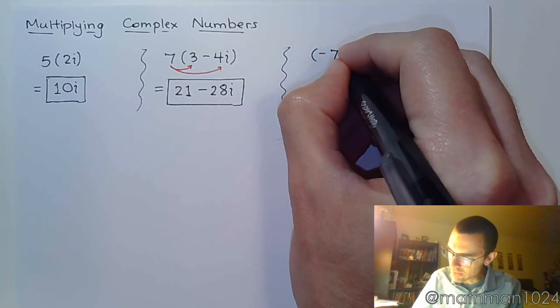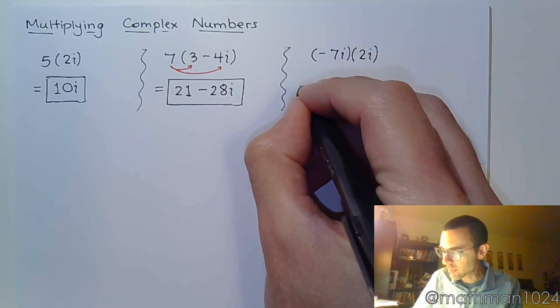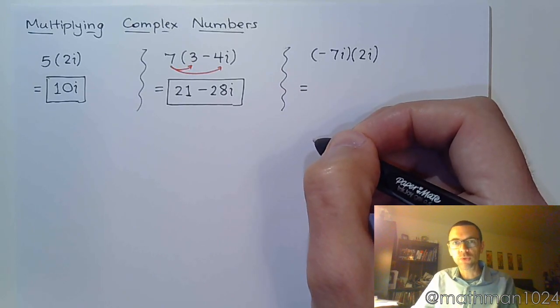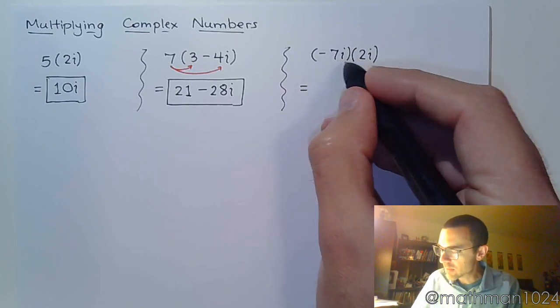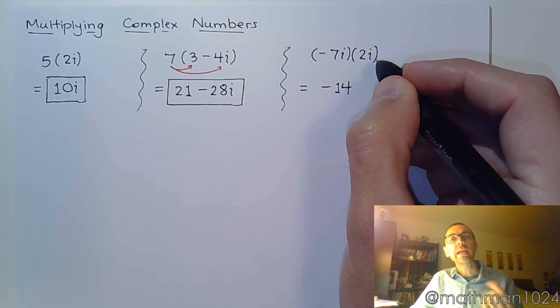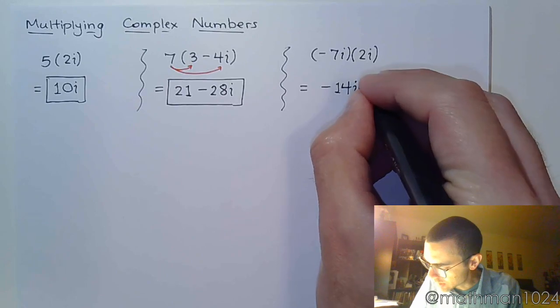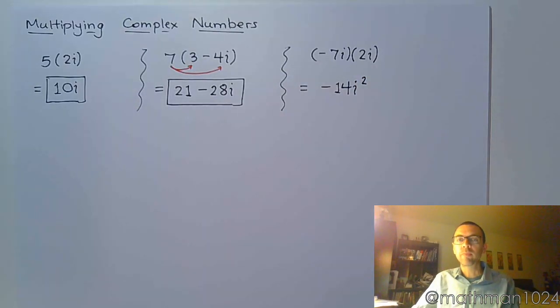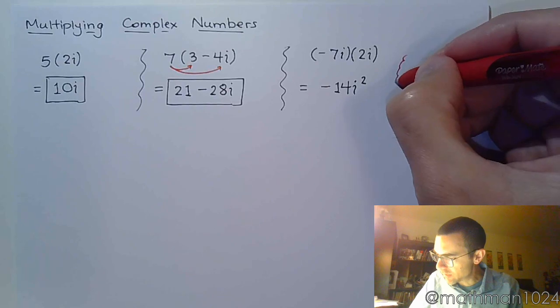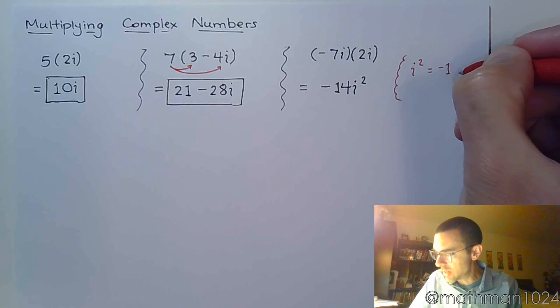If I take negative 7i times 2i, just going through normal rules for multiplication, negative 7 times 2 is negative 14, and then you have i times i. So much like x times x would become x squared, i times i becomes i squared. But there's a little caveat here. We can't leave i squared as i squared. One of the things we talked about in the first part of this series is that i squared is equal to negative 1.